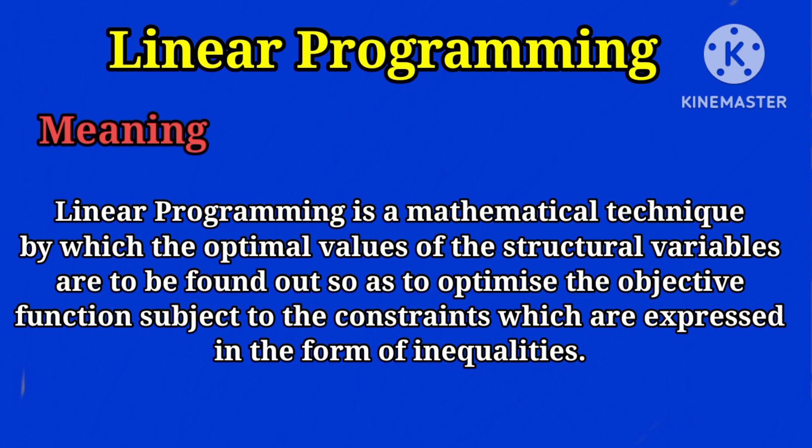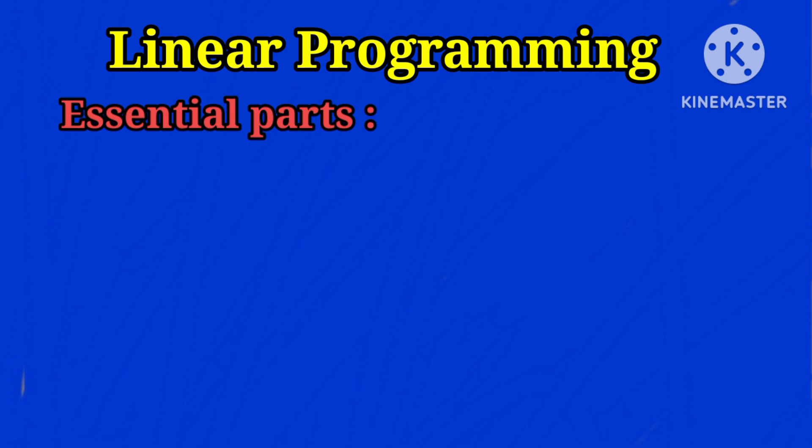Some essential parts of linear programming are: Number one, a set of non-negative constraints. This is to avoid getting negative solutions in which we are not interested, for example, negative price or negative output, which do not mean anything.